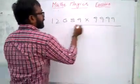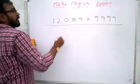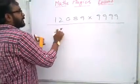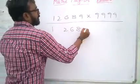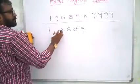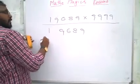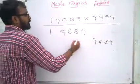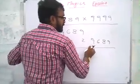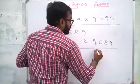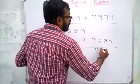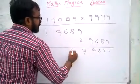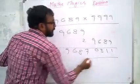Similarly, 12689 into 9999 — how many nines? Four. Make it into two parts. It becomes 1 and 2689. Write 2689 again, add one to the left part — it becomes 2. Its complement — write its complement, which is 0. So the product is 126887311.